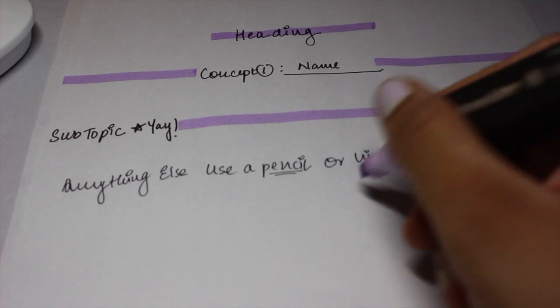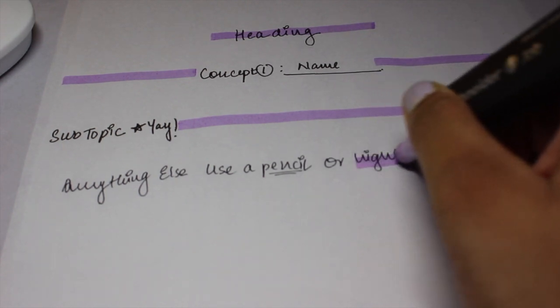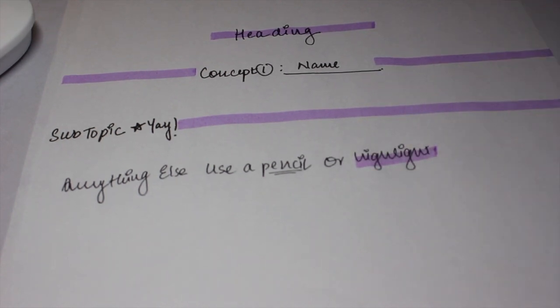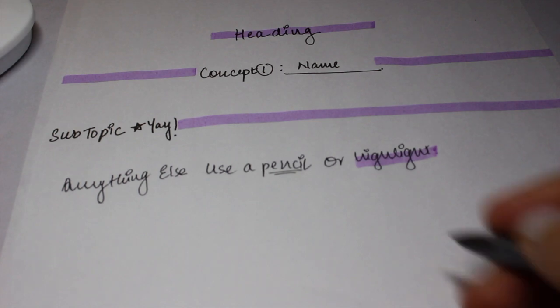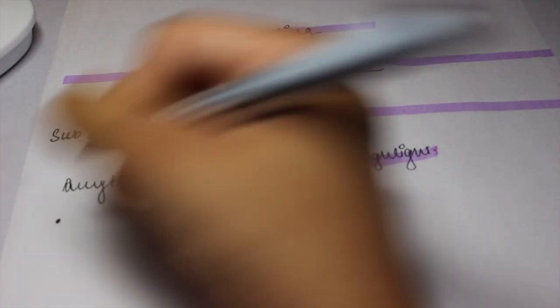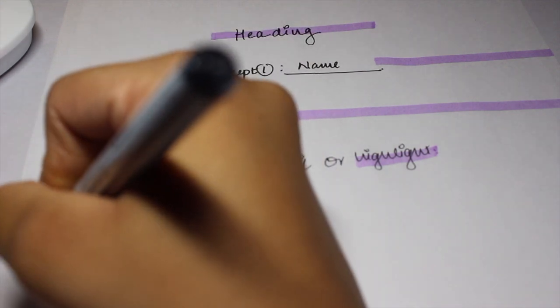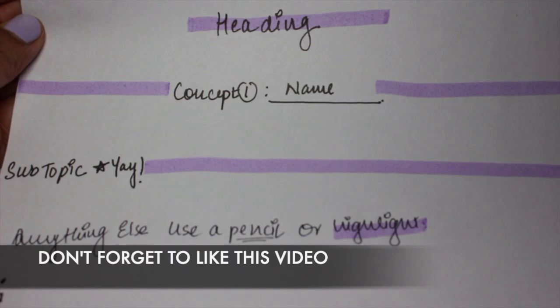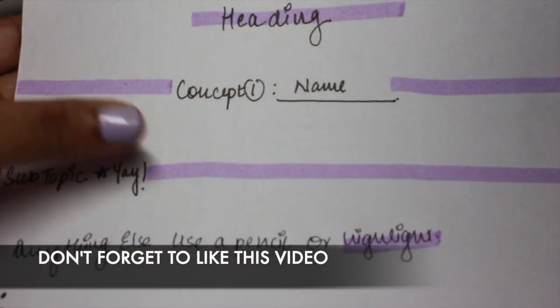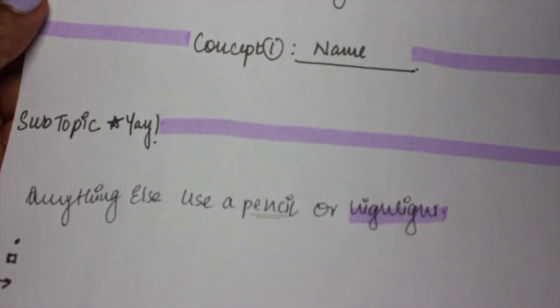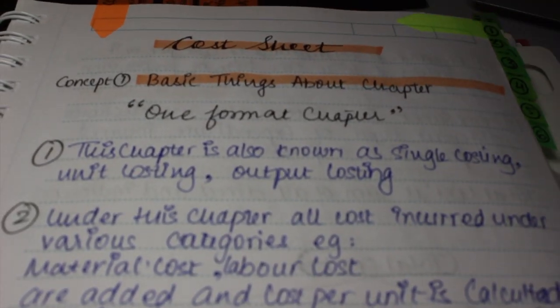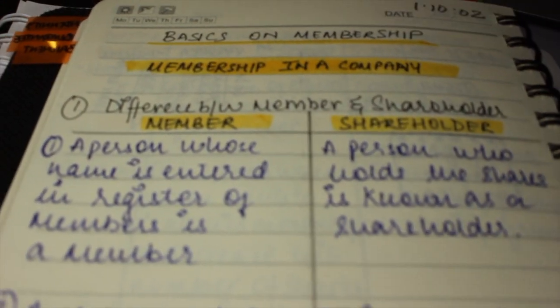At the end, use a pencil or highlighter. If using a highlighter, do not highlight the entire portion but just highlight it halfway through so it looks more presentable. There are bullets, square bullets, and arrow bullets that you can use for further subdivisions. This is the format I use in all my subjects.